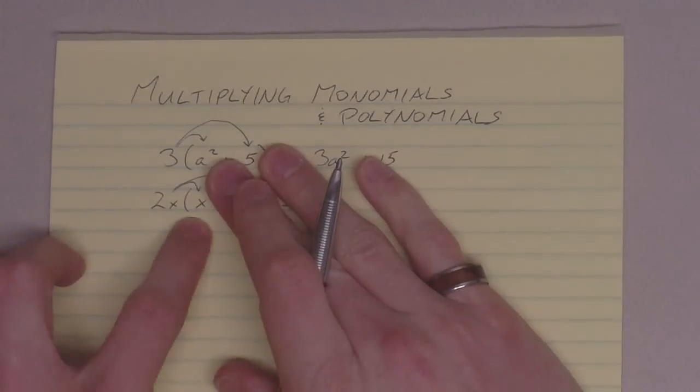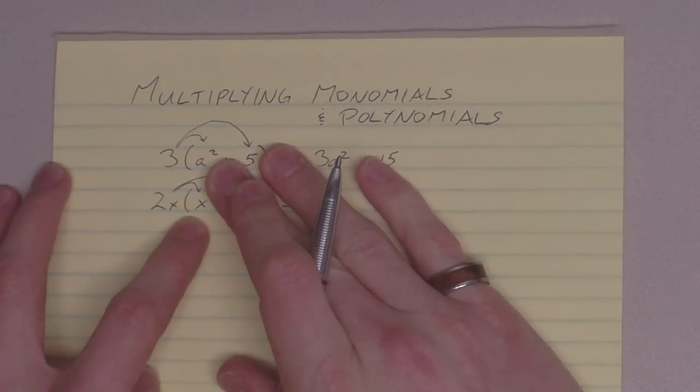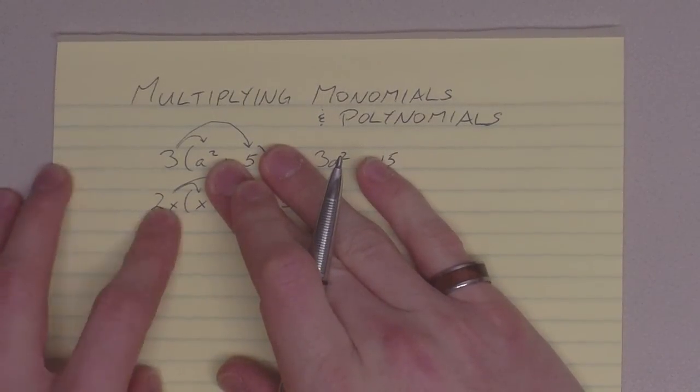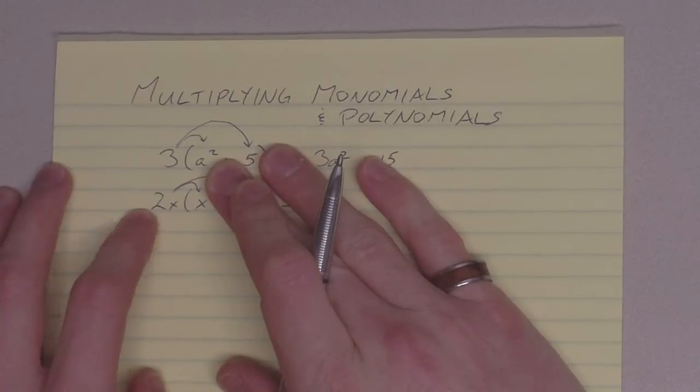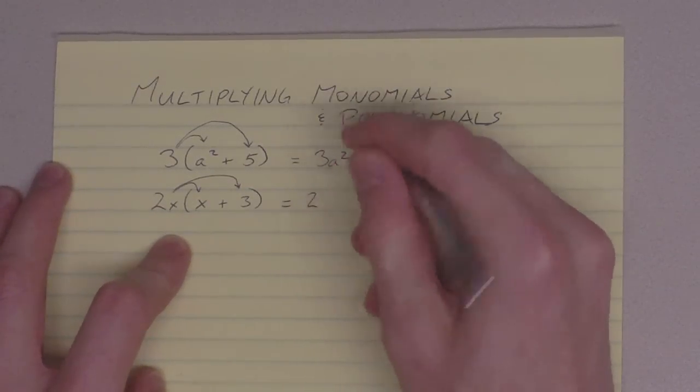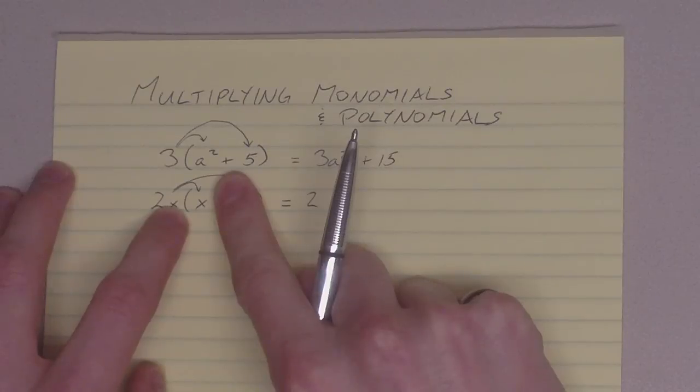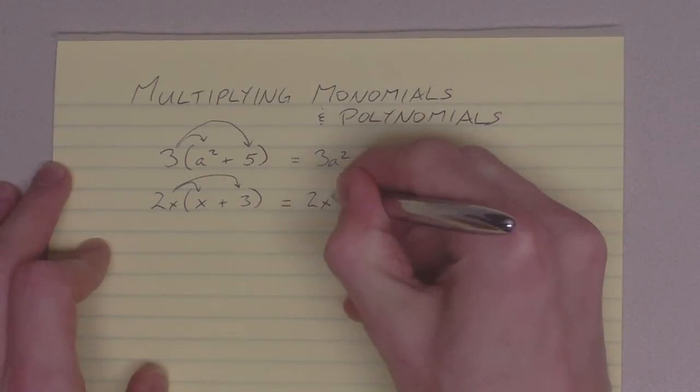The first one here we've got is 2x times x. Remember back when we're multiplying monomials together, that's what we have here, one monomial times another monomial right now. We multiply the coefficients, 2 times 1 gives us 2, and then we add the exponents. A little 1, a little 1 gives us x squared.